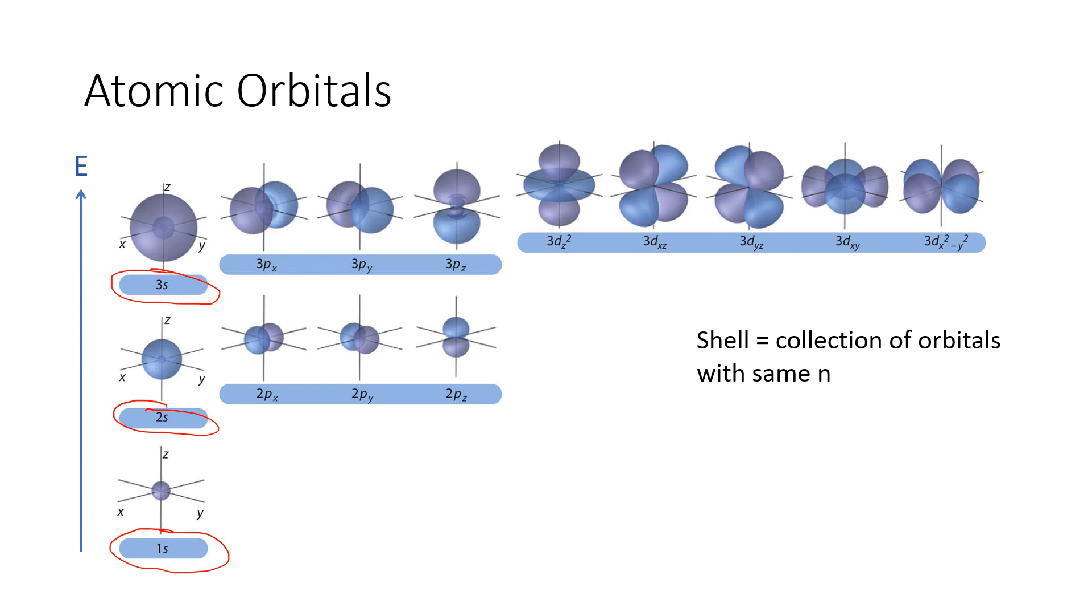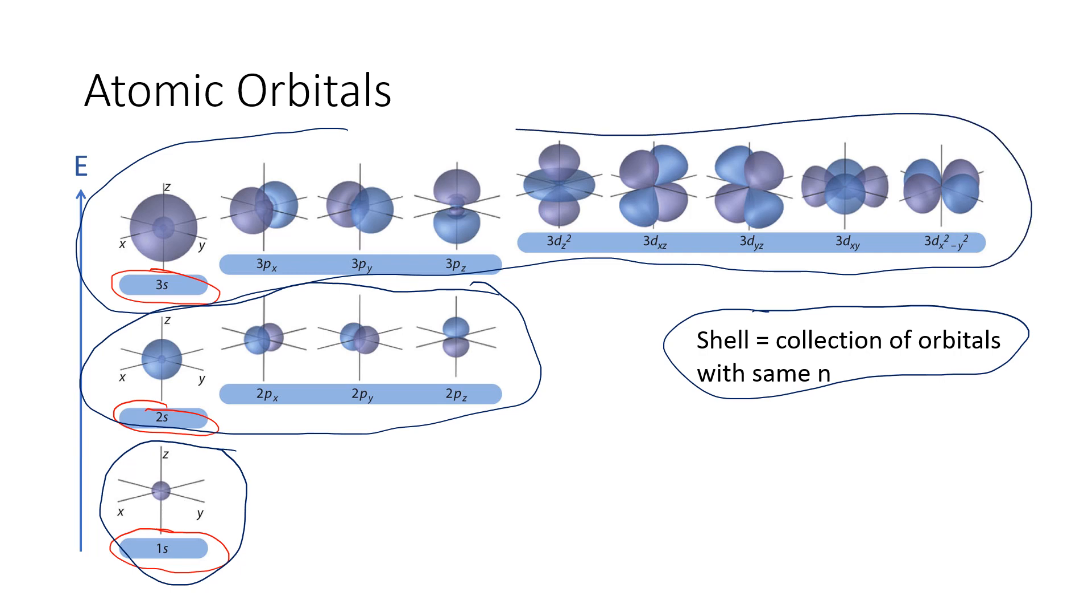So a shell is any collection of orbitals with the same n. And so I'm going to circle in blue all of the orbitals that are in the same shell. So in the n equals 1 shell, there's just a single orbital. In the n equals 2 shell, there are 4 orbitals. Three of them are p's and one of them is an s. And then in the n equals 3 shell, we have a grand total of 9 orbitals: 5 that are d's, 3 p's, and a single s.